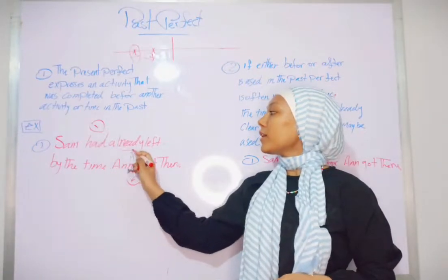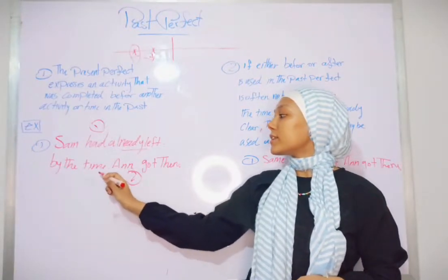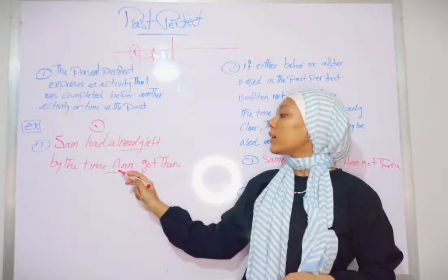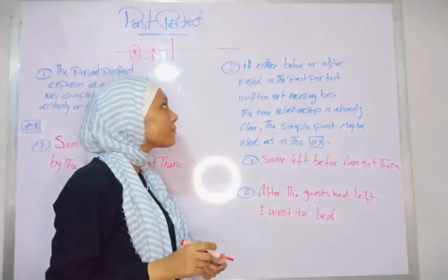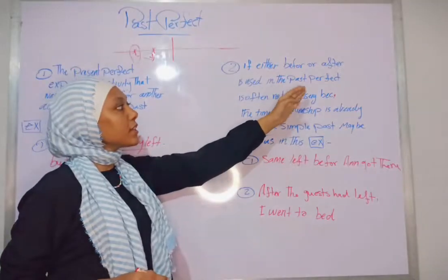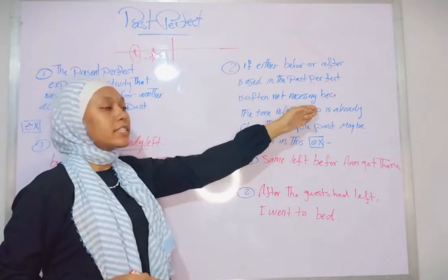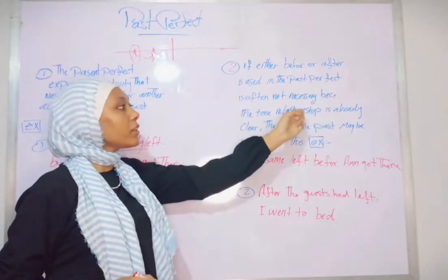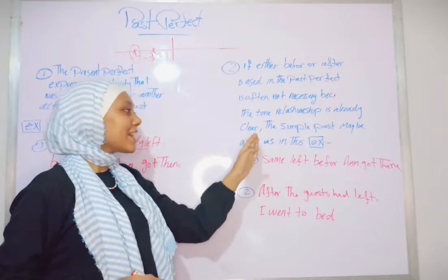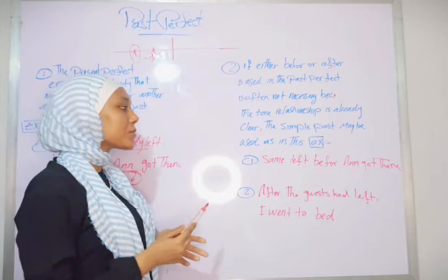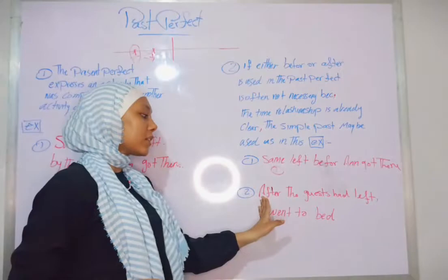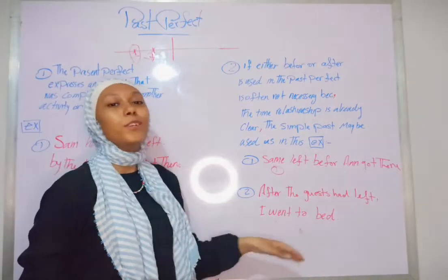For example: Sam had already left by the time Ann got there. The first activity is 'Sam had already left'; the second is 'Ann got there'. The second use: if 'before' or 'after' is used, the past perfect is often not necessary because the time relationship is already clear. The simple past may be used, as in: 'Sam left before Ann got there' or 'After the guests had left, I went to bed'.